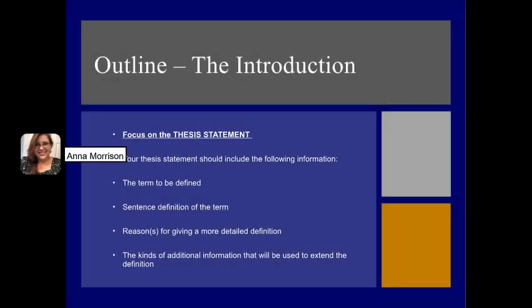You really need to focus on your thesis statement because it's the roadmap for you when writing the paper and for your audience when reading it. You definitely need to have the term to be defined, the definition of the term, the reasons for giving a more detailed definition — which may be implied — why it is important to understand this term, and the kinds of additional information that will be used to extend the definition. That's your plan of development, your three supporting points, and you should have a paragraph for each one.